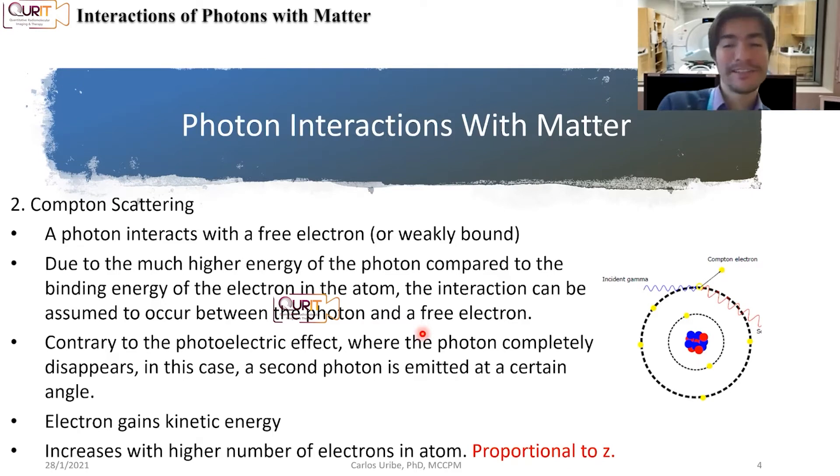Now, contrary to photoelectric effect, in this case, we don't completely lose the photon. What happens is that that photon transfers some energy to the electron and then we obtain a new photon that has lost some energy. So because it's lost some energy, we have a different frequency and that is now traveling in a slightly different direction.